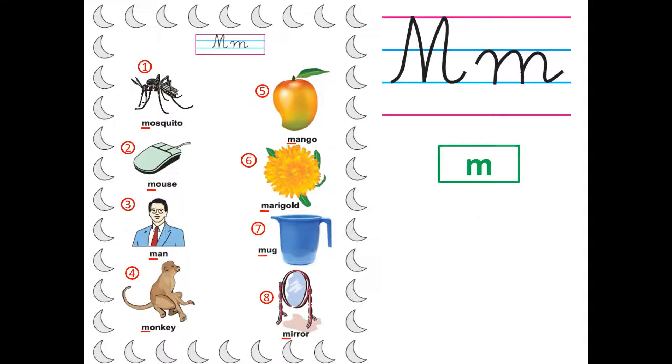Now look at picture number 1. What is it? It is a mosquito. M-ma-mosquito. You must repeat after Anubha ma'am. M-ma-mosquito.